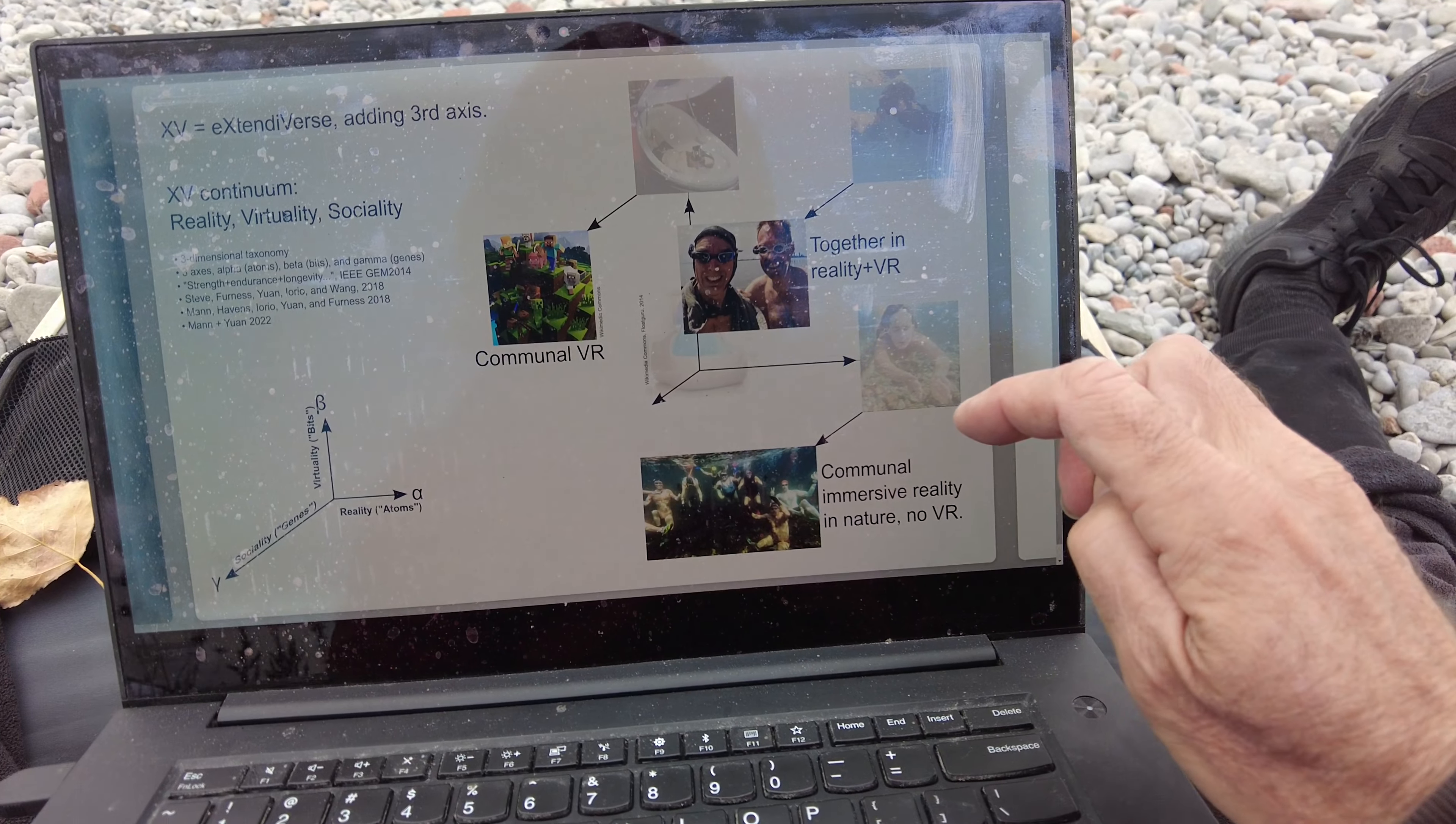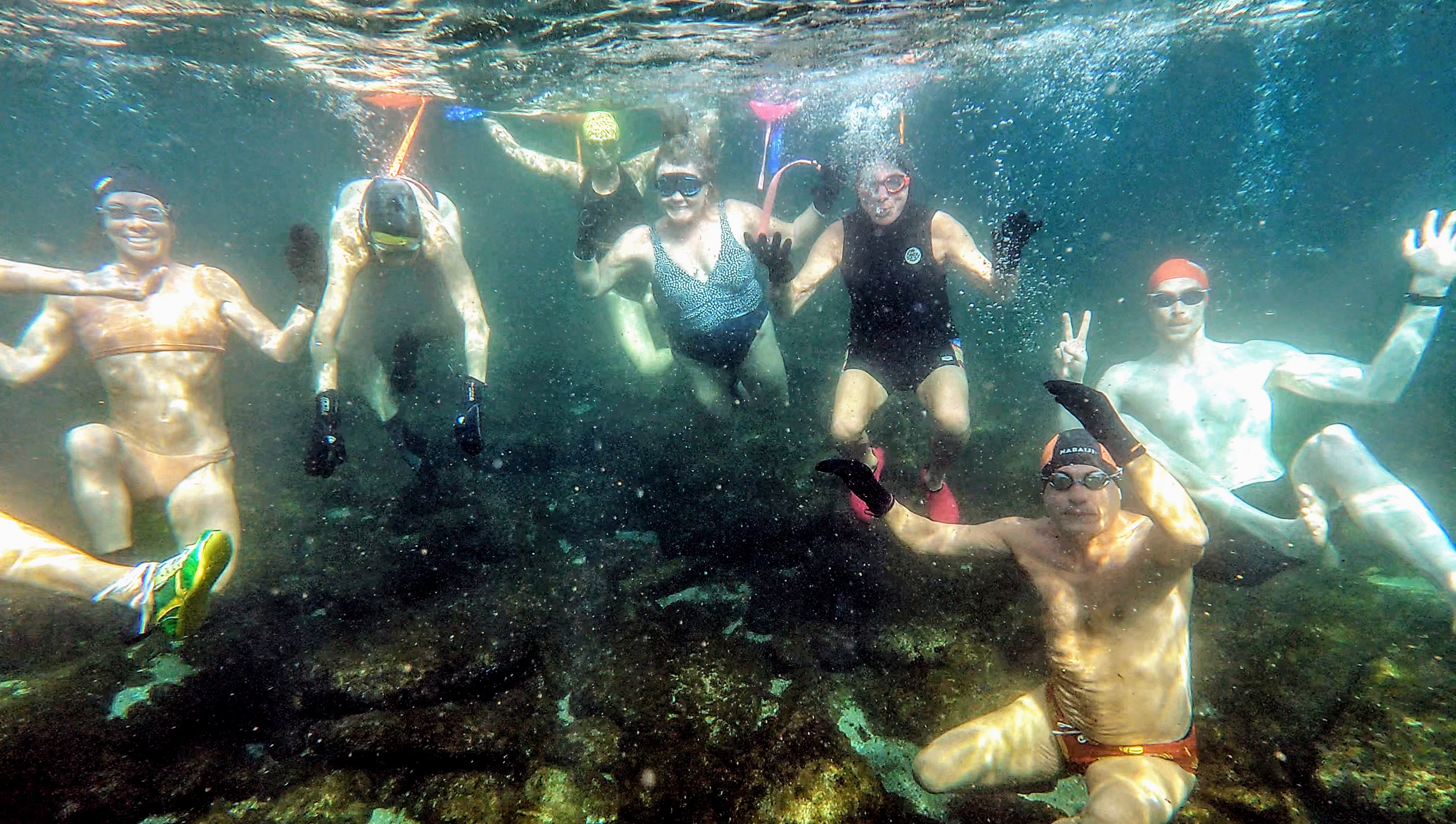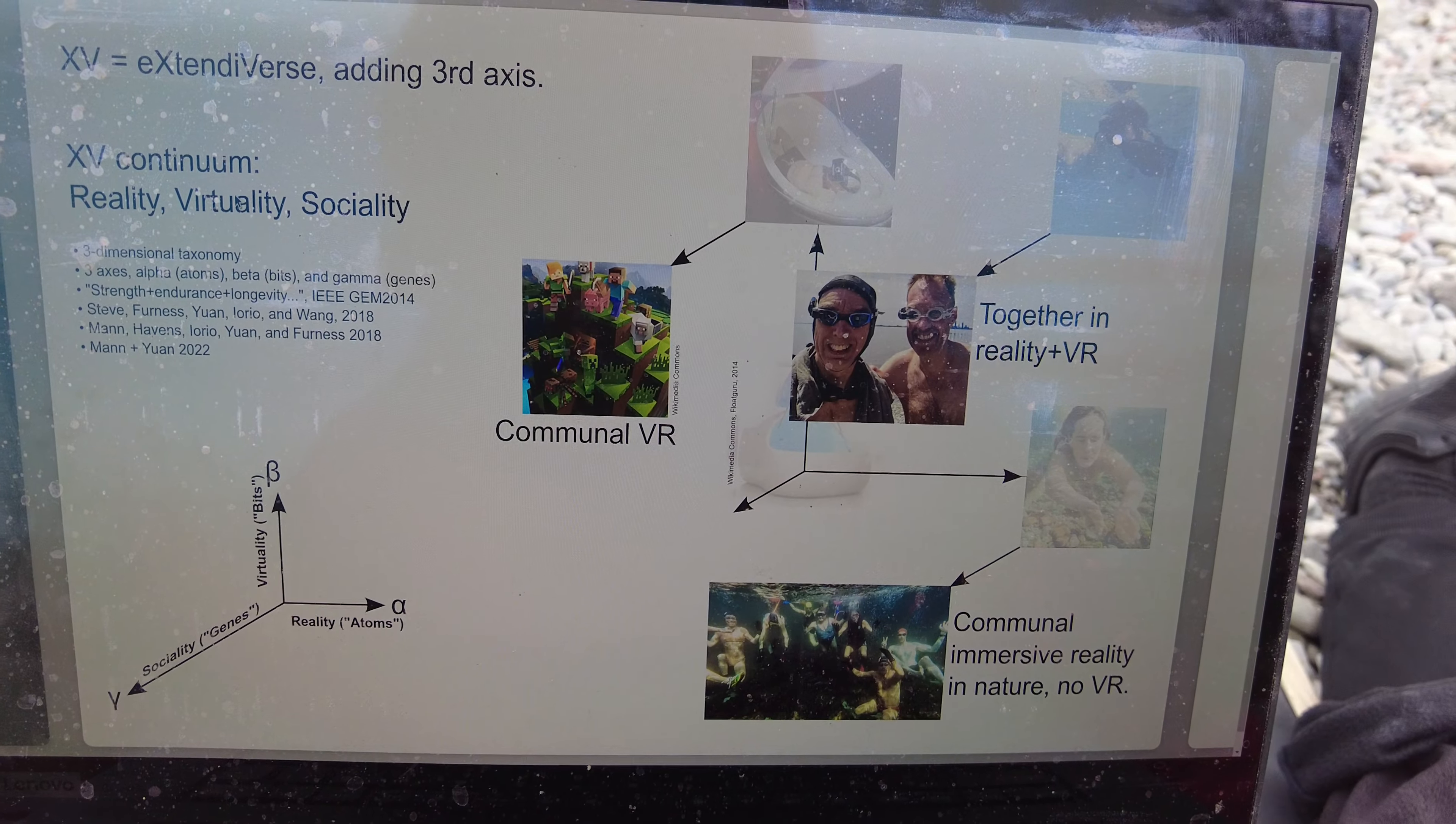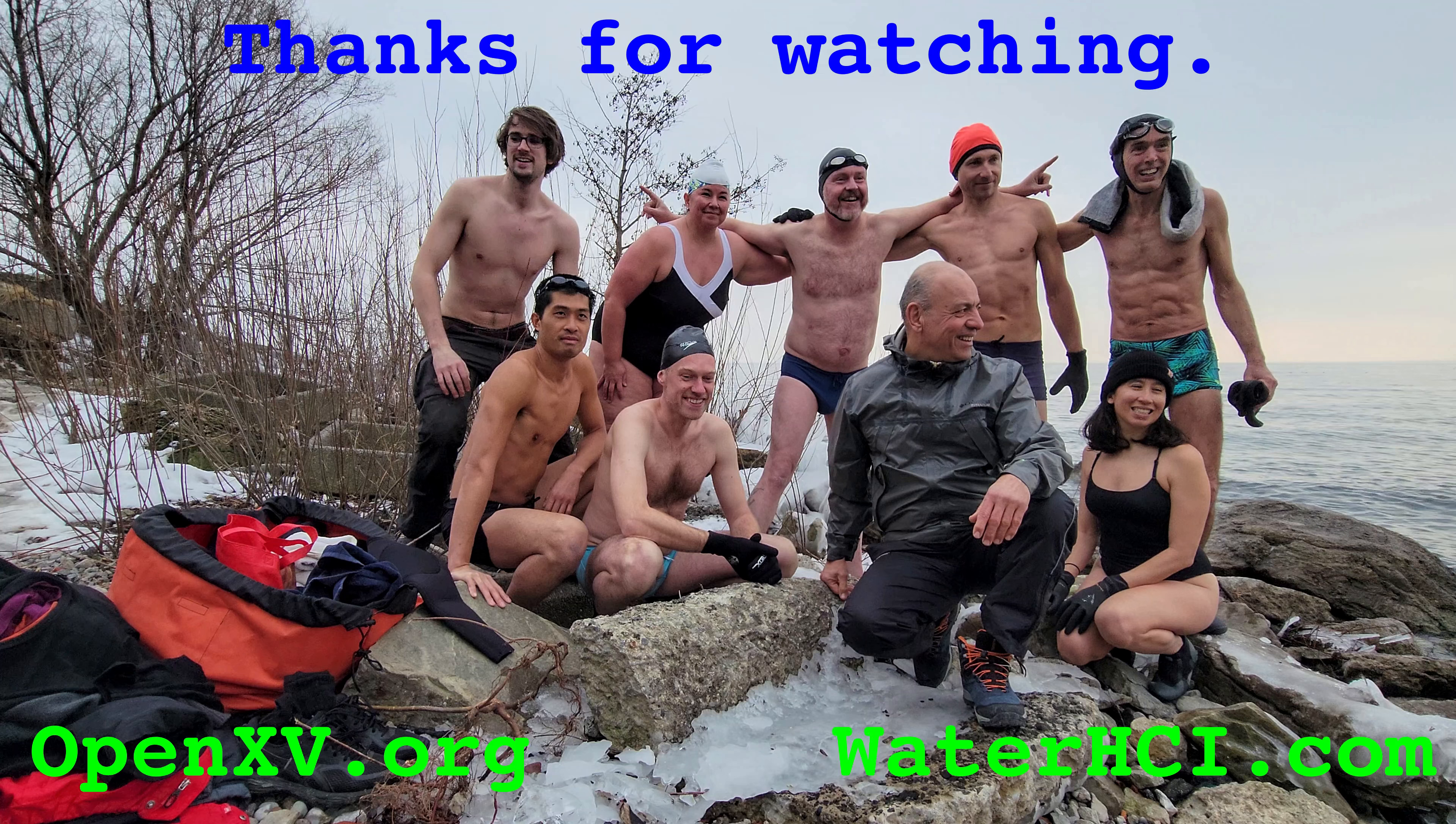So we can have a communal immersive reality experience, like a communal experience in nature. We have ice water swimming together as a group. That's a communal reality experience, an immersive physical reality experience. We can have augmented reality ice water swimming together as a group. So that's a shared augmented reality experience. And of course we can have a completely virtual experience, like shared sensory deprivation float tanks, where we get together and we experience the float tanks together as a group, or any other kind of shared reality. So that gives us the third axis.